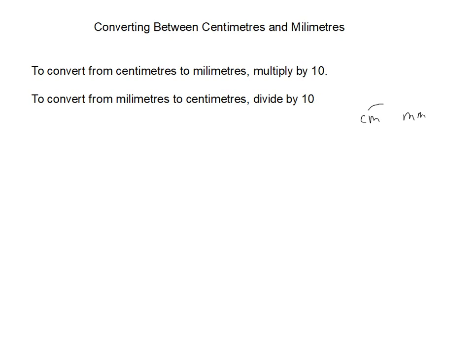If we want to go this way, because there are 10 millimeters in every centimeter, we end up multiplying by 10 here to figure out how many millimeters there are. And if we want to go from millimeters to centimeters, we would have to do the opposite. So here we would divide by 10.